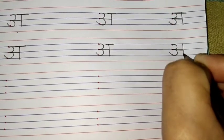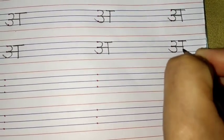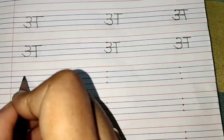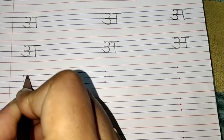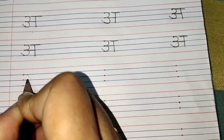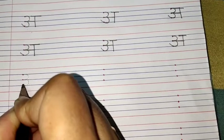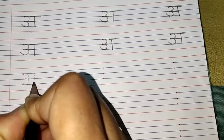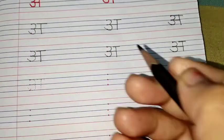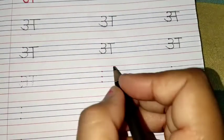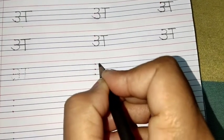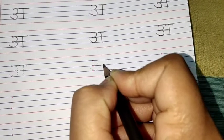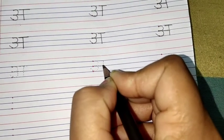Aur agar aapko notebook ki in chhoti lines mein likhna nahi aa raha hai, toh aap mama ko bolo ki aapko white page pe badi badi A ki tracing karni hai. Dear parents, if the child is not able to write and it is difficult, then you can give it in dotted and give it in full A until they don't forget to write.